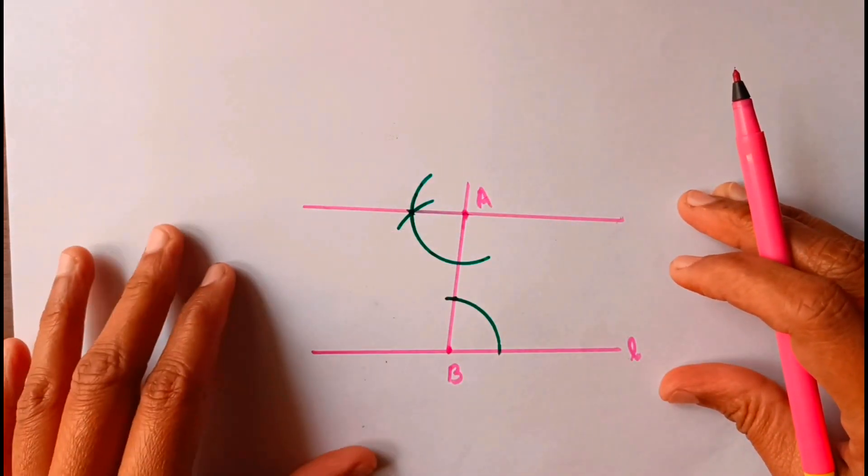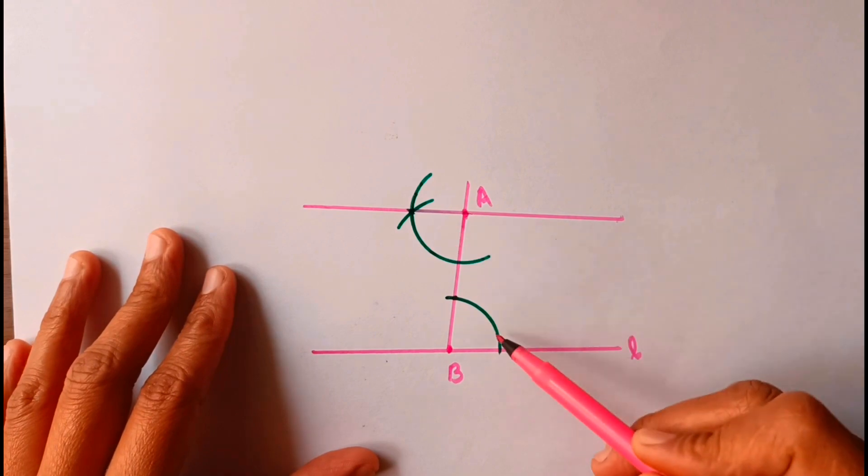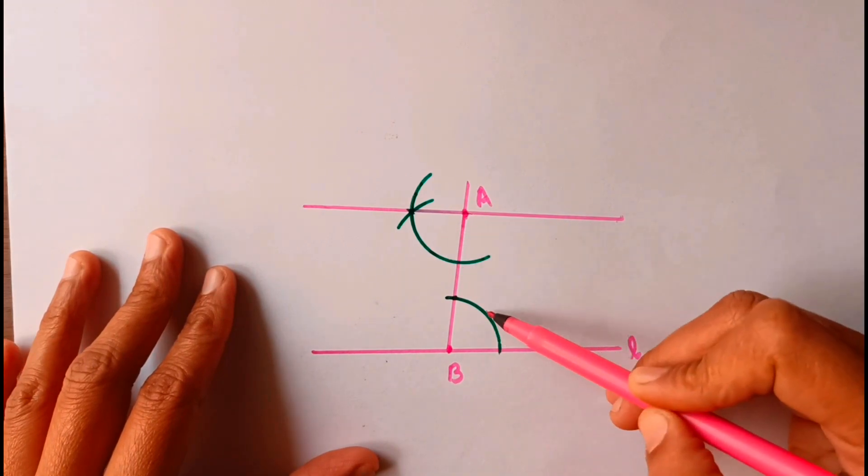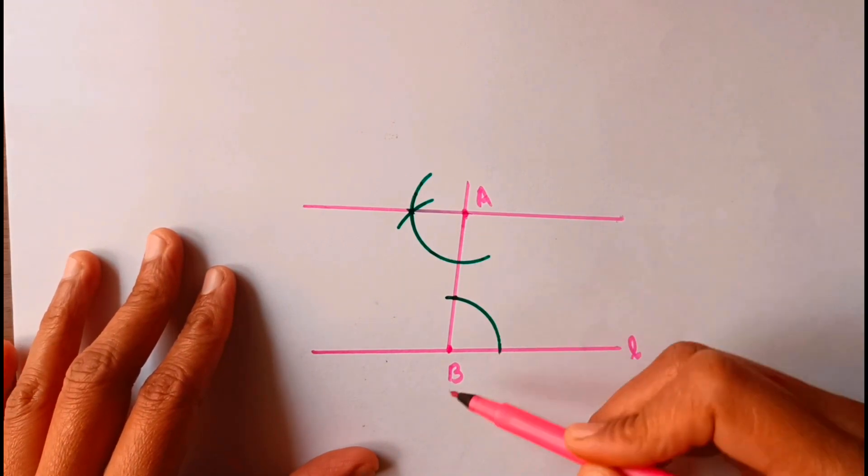This is how you can make the parallel lines. These are alternate interior angles. That's why the two lines, line L and line M, are parallel to each other.